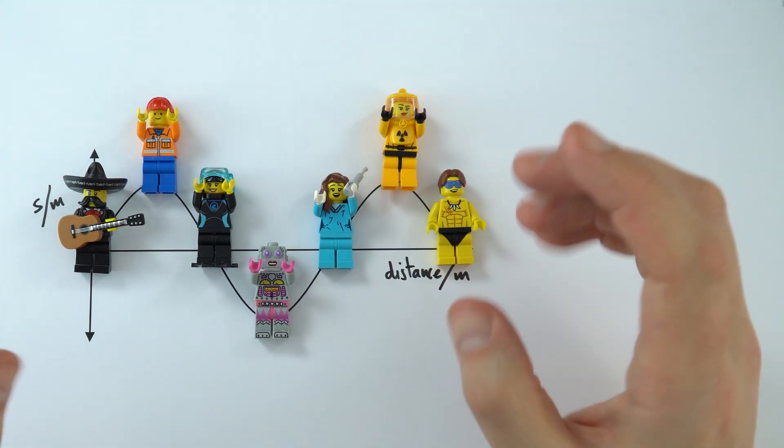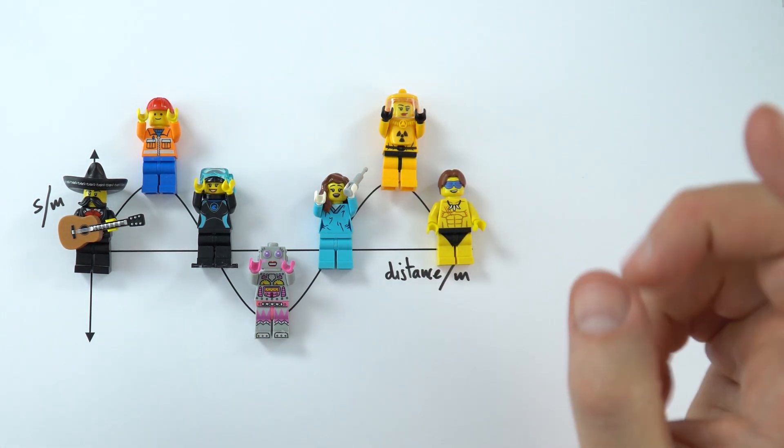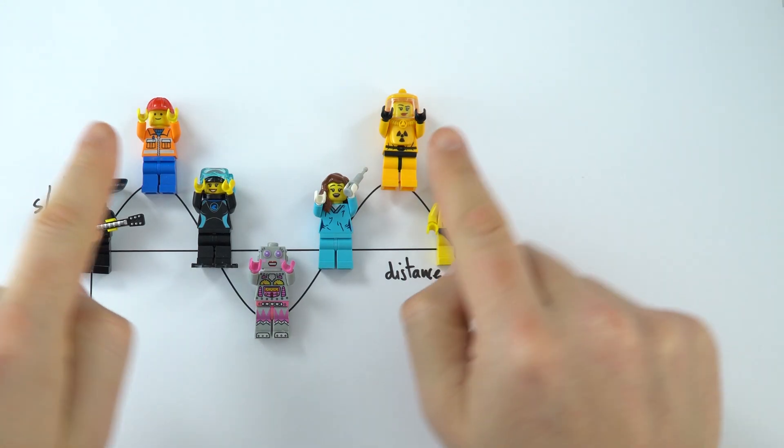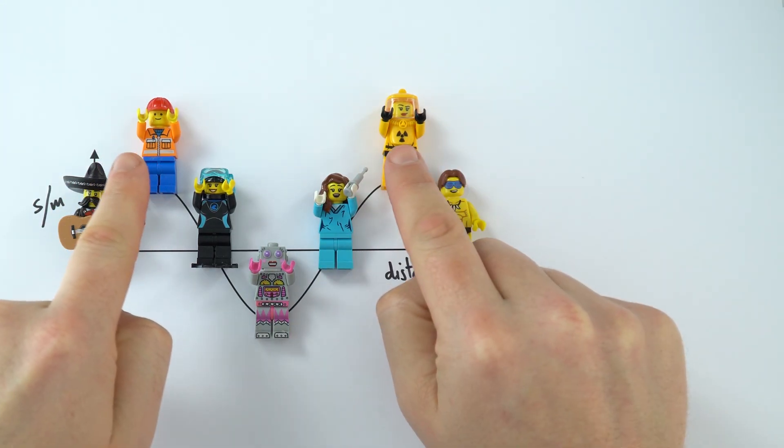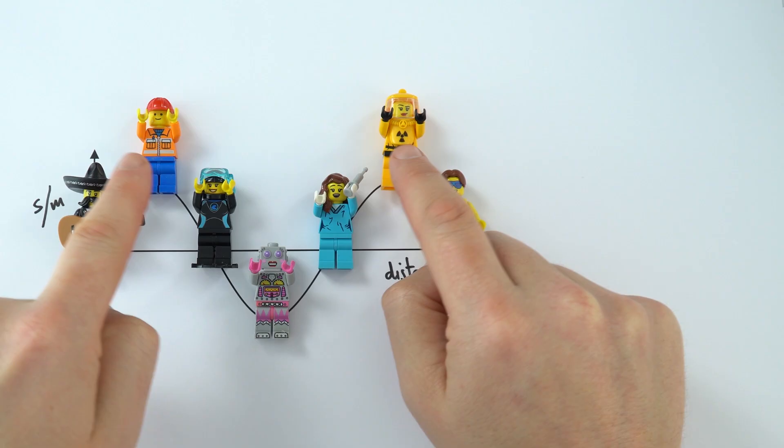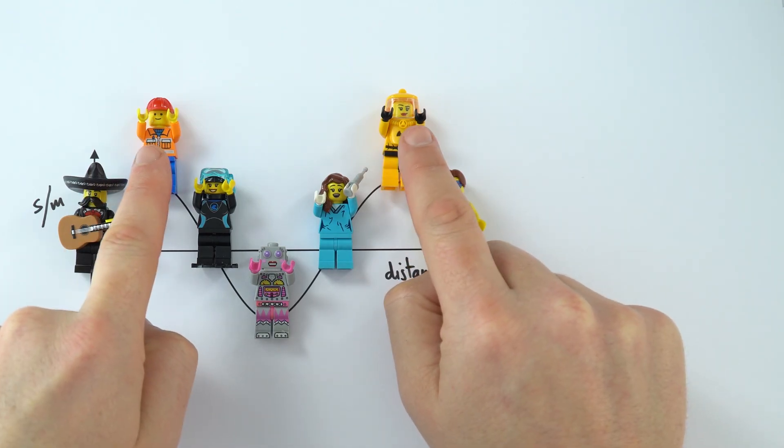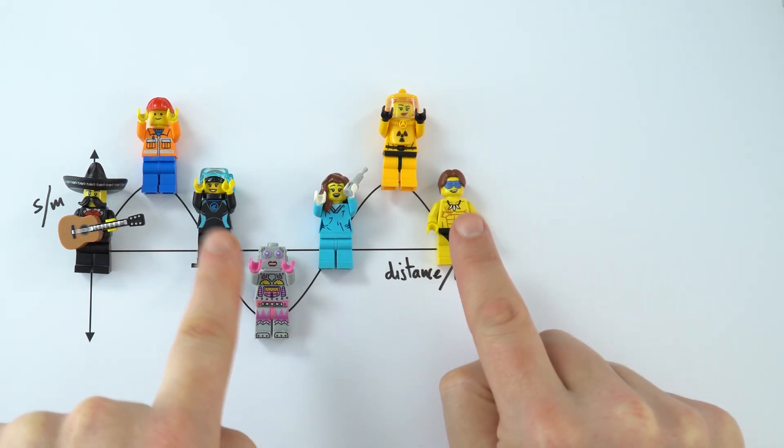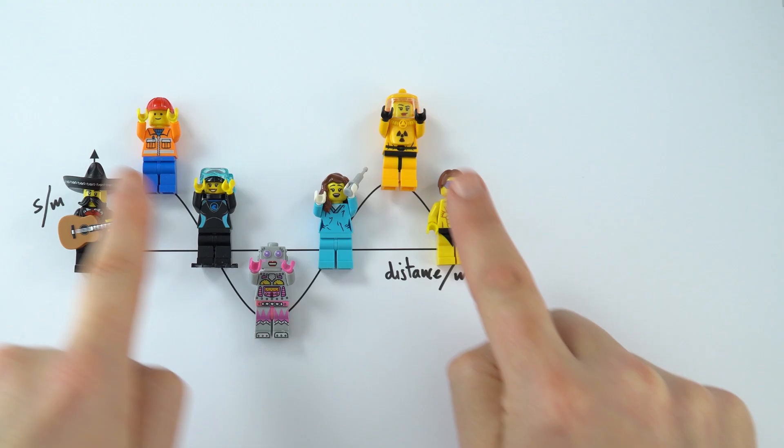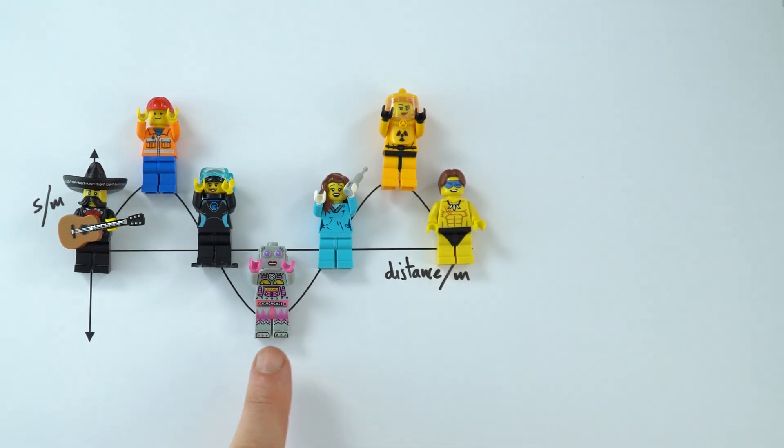Now what we can think about here is people who are in similar positions. What we might see is that these two people here, so the construction worker and the person in the hazardous material suit, they're both at the very top of the wave. These people here are both maybe coming down and they're now in the middle position.